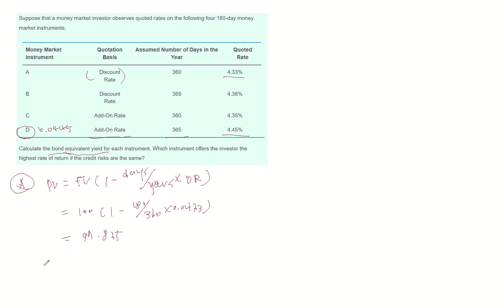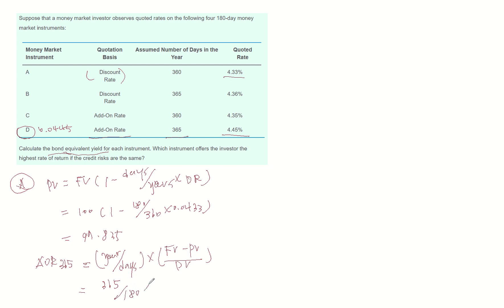Now we can calculate the add-on rate based on 365. Add-on rate based on 365 is calculated by years divided by days multiplied by future value minus present value, divided by present value. So: 365 divided by 180, multiplied by (100 minus 98.835) divided by 98.835, which becomes 0.04487. So the BEY of instrument A is 0.04487.